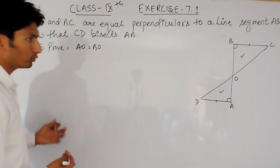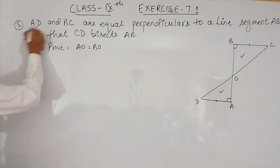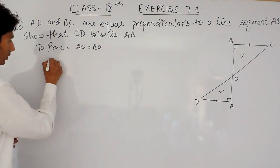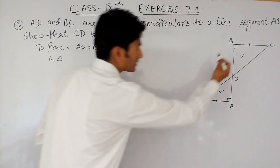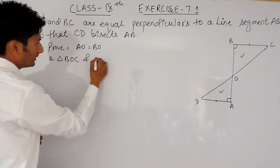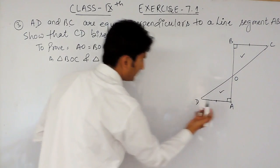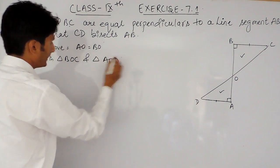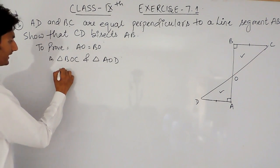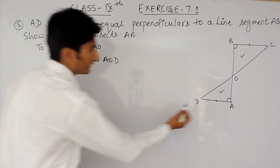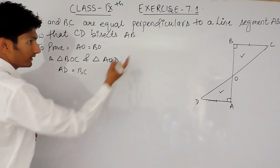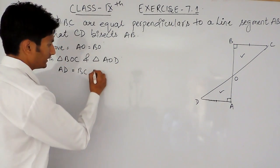Now, how to prove that these triangles are congruent? First, it is given that side AD and side BC are equal. So in triangle BOC and triangle AOD, we have AD equals BC — this is given.